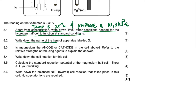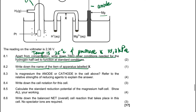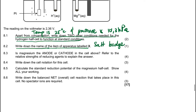Write down the name of the apparatus labelled X. This apparatus labelled X is the salt bridge. It is called the salt bridge because it contains an ionic salt solution inside.